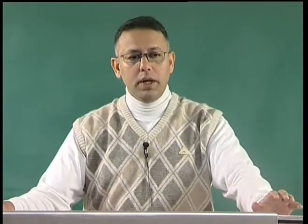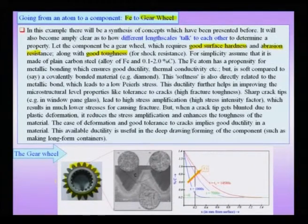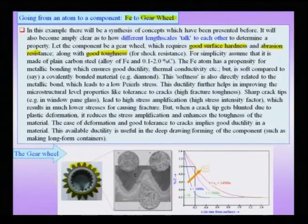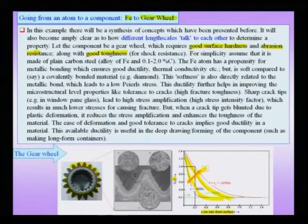The way the engineering is done is that the gear wheel is machined into a certain geometry, and what is done is that the surface of the gear wheel is actually preferentially imposed with more carbon than the interior. We have a gear wheel on which we impose a carburizing medium, and the carburizing medium lets carbon diffuse into the sample. With increasing time, more and more carbon is actually diffusing into the sample, thereby preferentially increasing the carbon content of the surface.